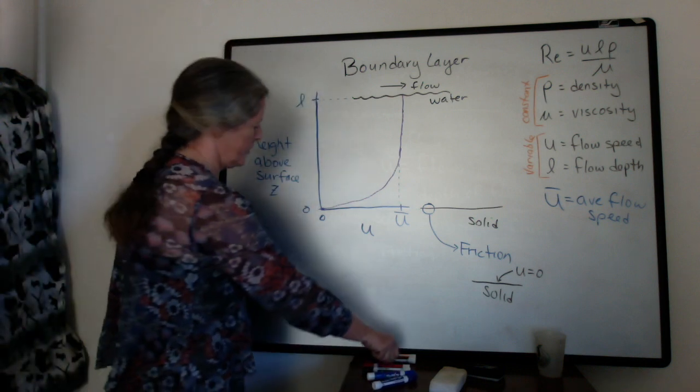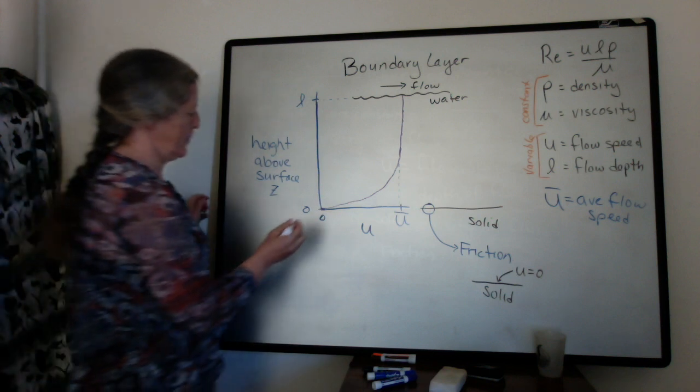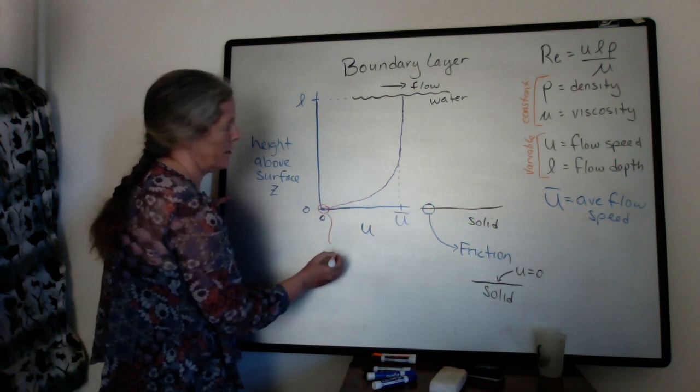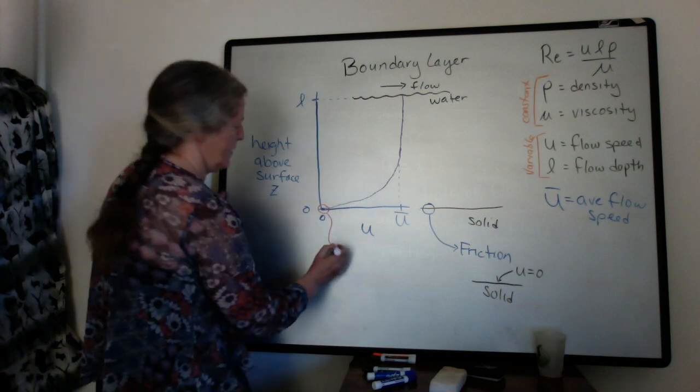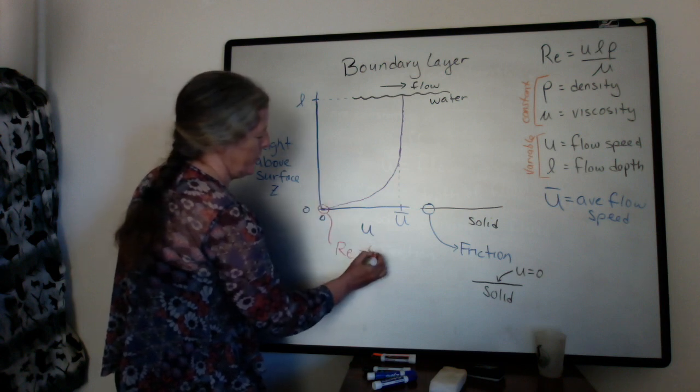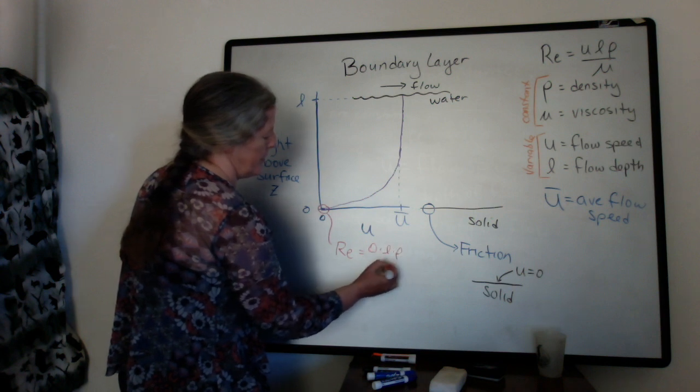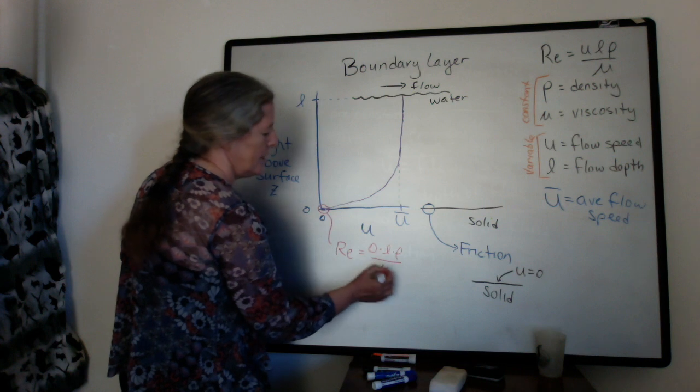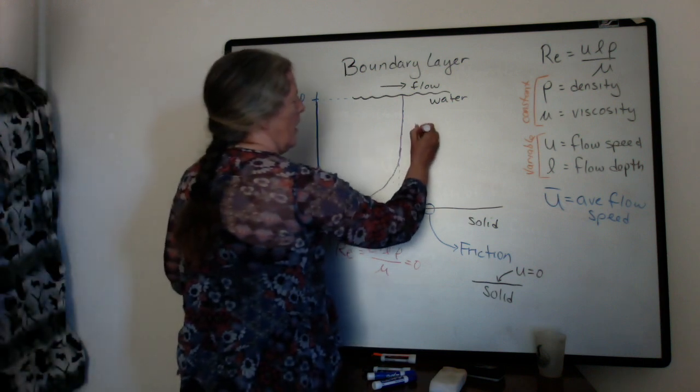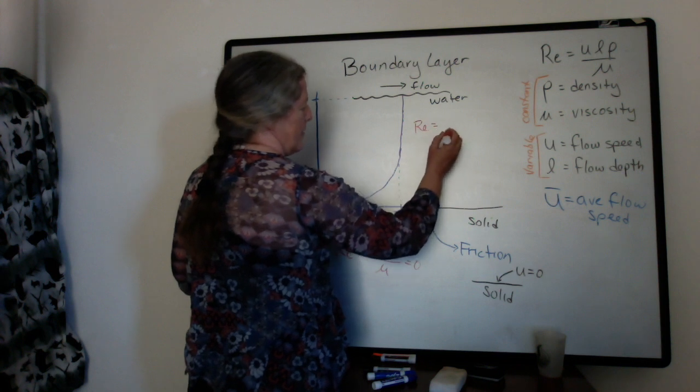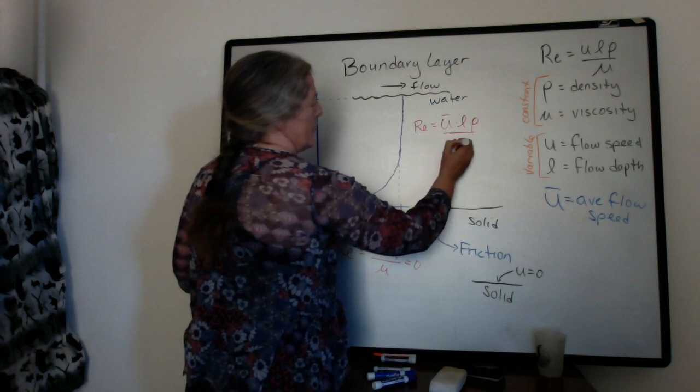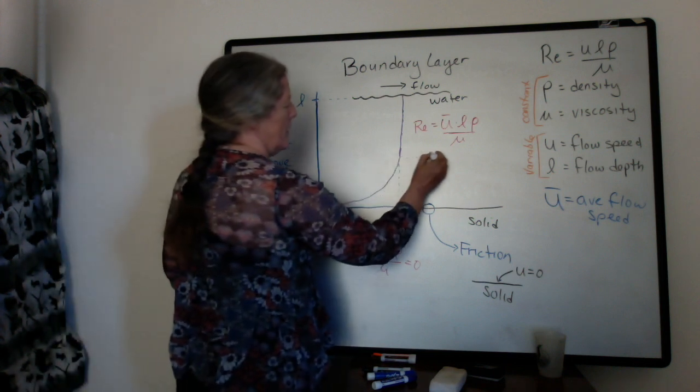If we think about it in terms of the Reynolds number, if we look at where the flow speed is zero, right at the surface here, our density and viscosity are the same. And so we have our Reynolds number equals a flow speed of zero times our flow depth, times our density over the viscosity. These don't matter. So our Reynolds number is actually zero. If we look up here, our Reynolds number is the average flow speed, or u bar, times the flow depth, times the density, divided by the viscosity, up in this zone here.